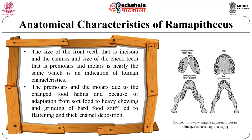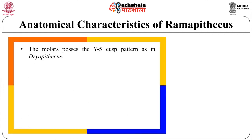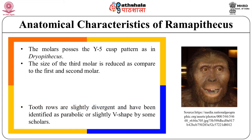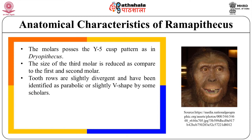The premolars and molars, due to the change in food habits and adaptation from soft food to heavy chewing and grinding of hard food, have become flattened with thick enamel. The molars possess the Y-5 cusp pattern as in Dryopithecus. The size of the third molar in Ramapithecus is reduced as compared to the first and second molars. The tooth rows are slightly divergent and have been identified as parabolic or slightly V-shaped by some scholars.